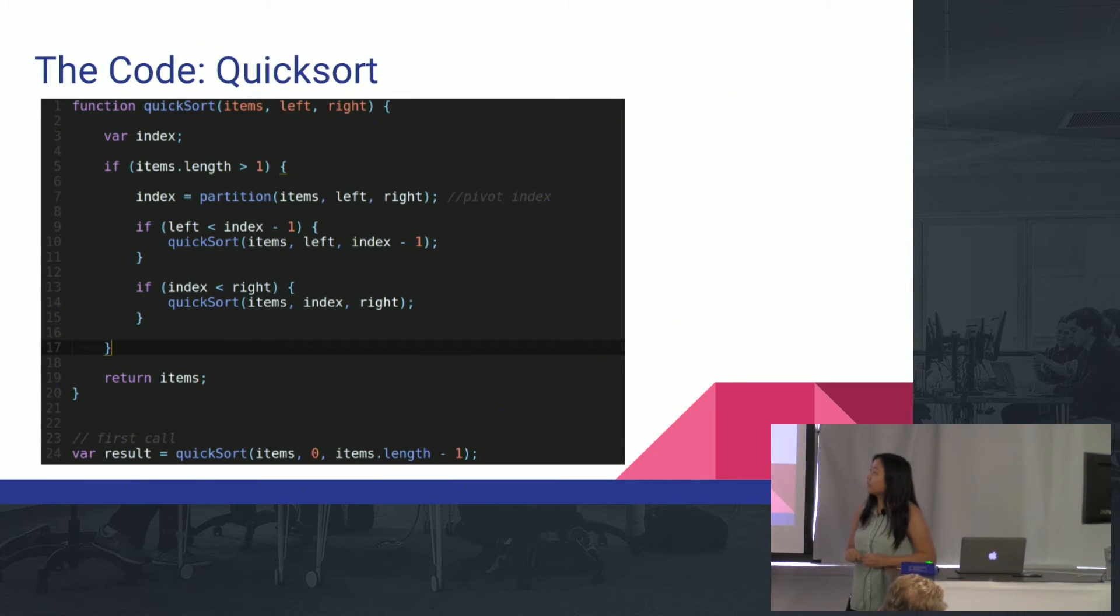The index that's returned from the partition just helps you figure out where the pivot is, so you can check how far the left and right pointers are from the pivot. And the initial call is with the array, index zero, and the last index. So that's the quicksort function.